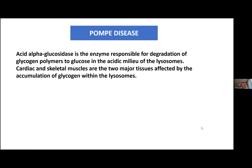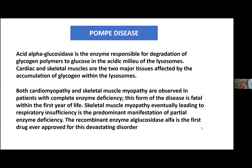Pompe disease is caused by deficiency of acid alpha-glucosidase, the enzyme responsible for degradation of glycogen polymer. When there is a failure in this degradation, glucose accumulates in cardiac and skeletal muscle. Cardiac muscle and skeletal muscle are the major systems affected by this enzyme deficiency. There are subtypes, and as we heard from Prof. Hussain's talk, there are also milder phenotypes, but the severe form will die from respiratory insufficiency.